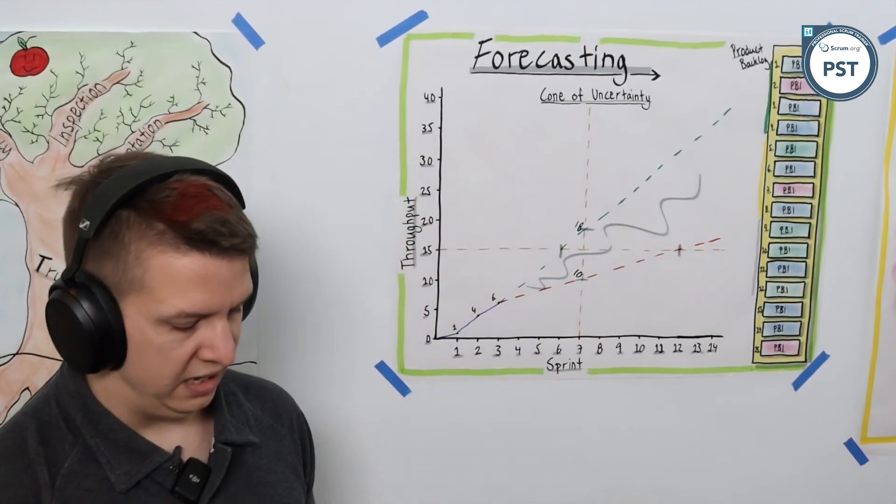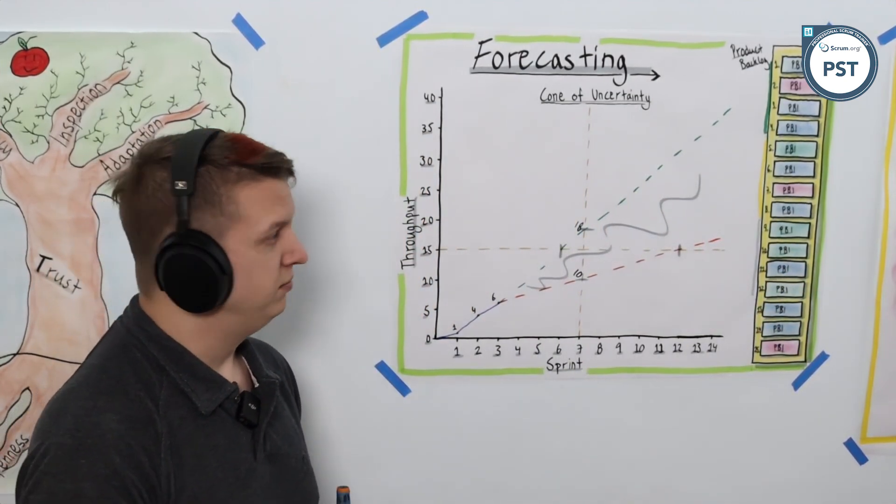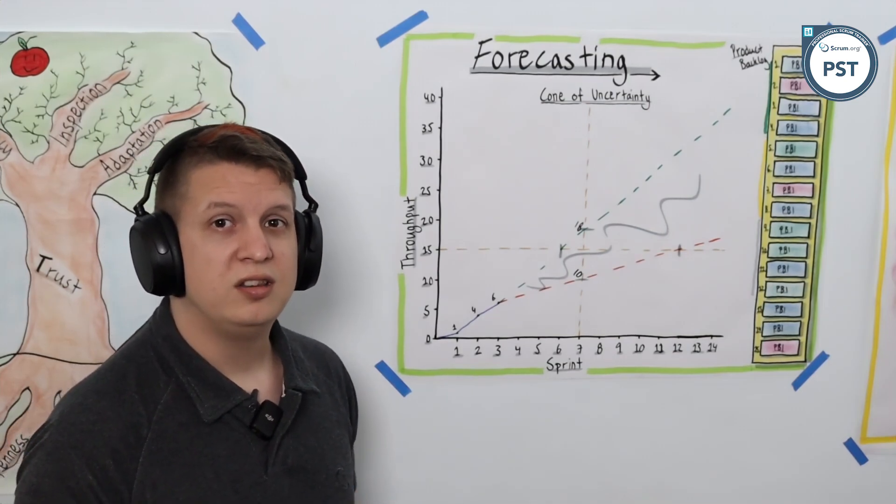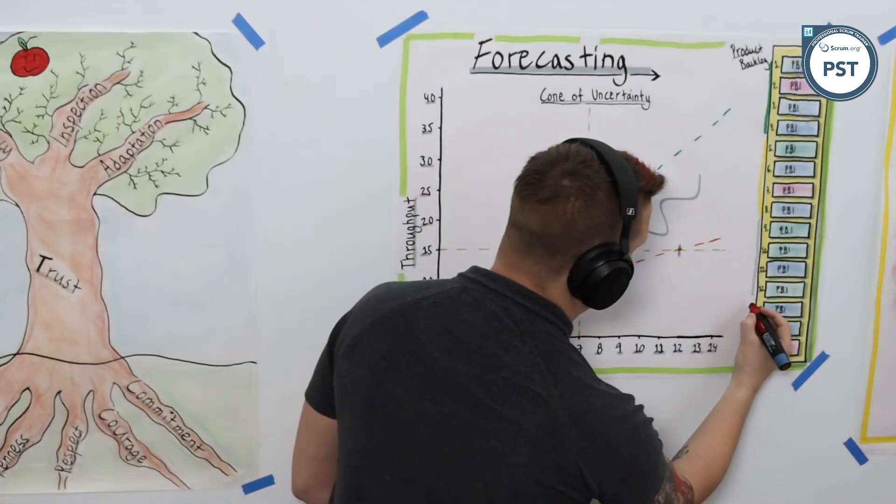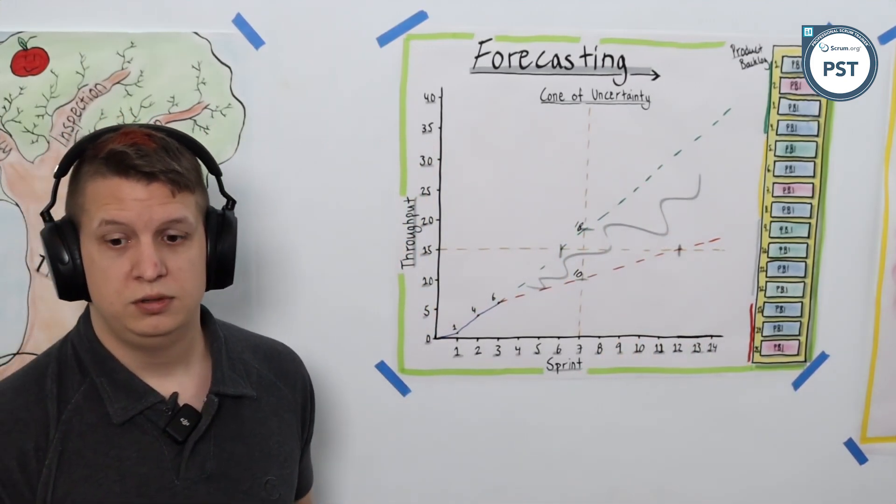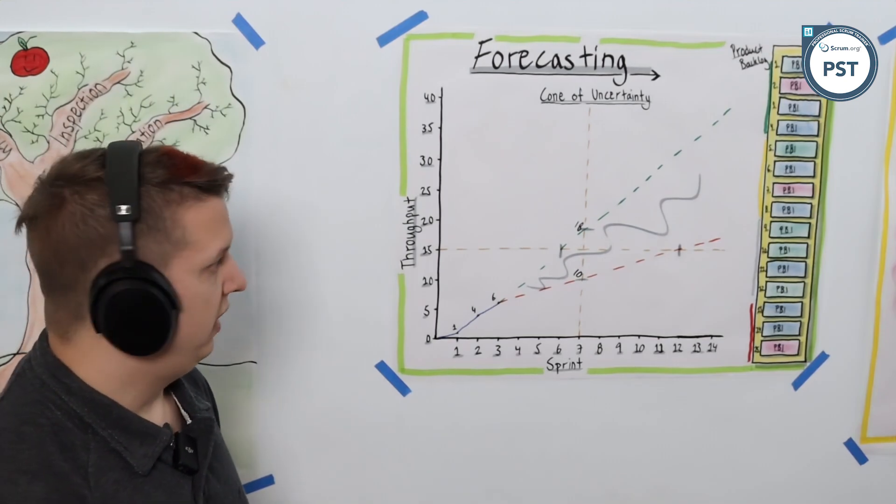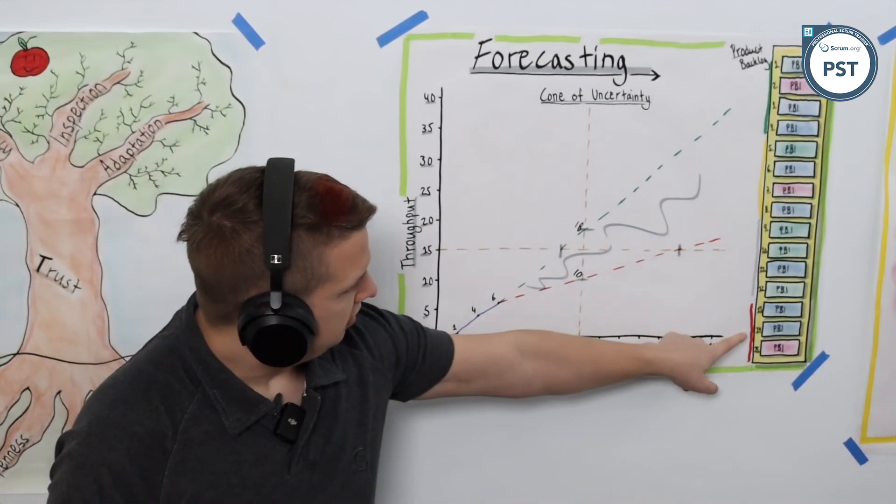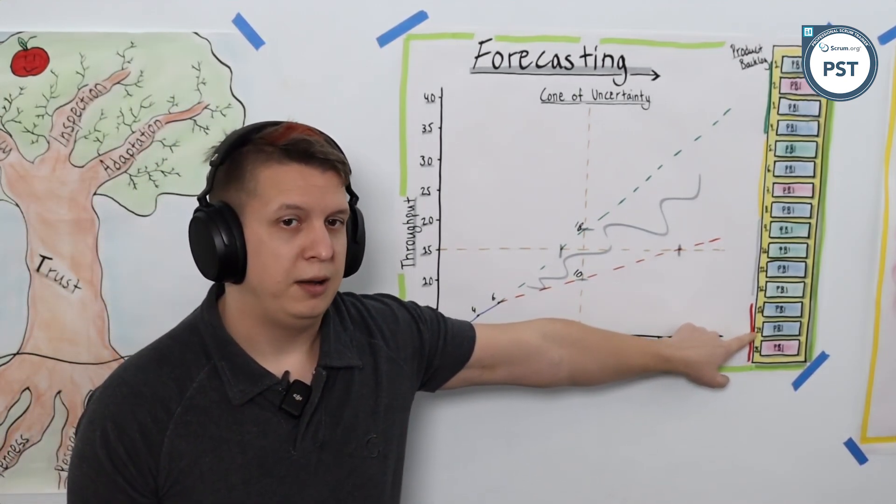Then we get into the area where we really want to be careful, because even with our best results so far, this has never happened. That's these three down here, which means we really don't want to be promising those three at all.